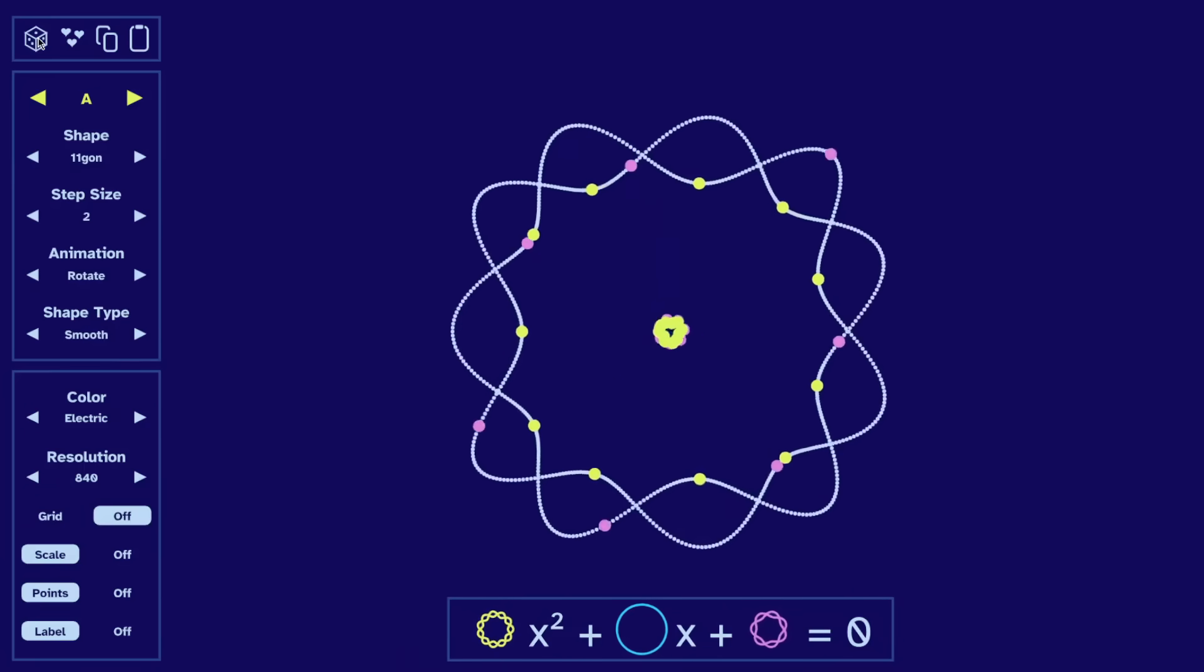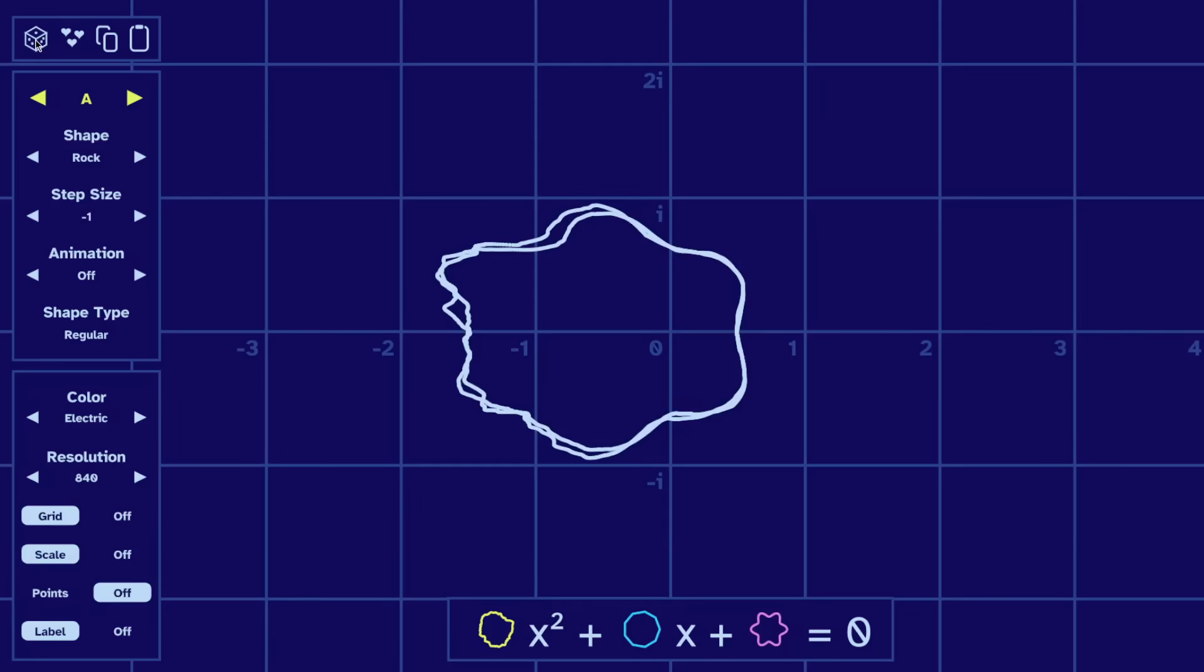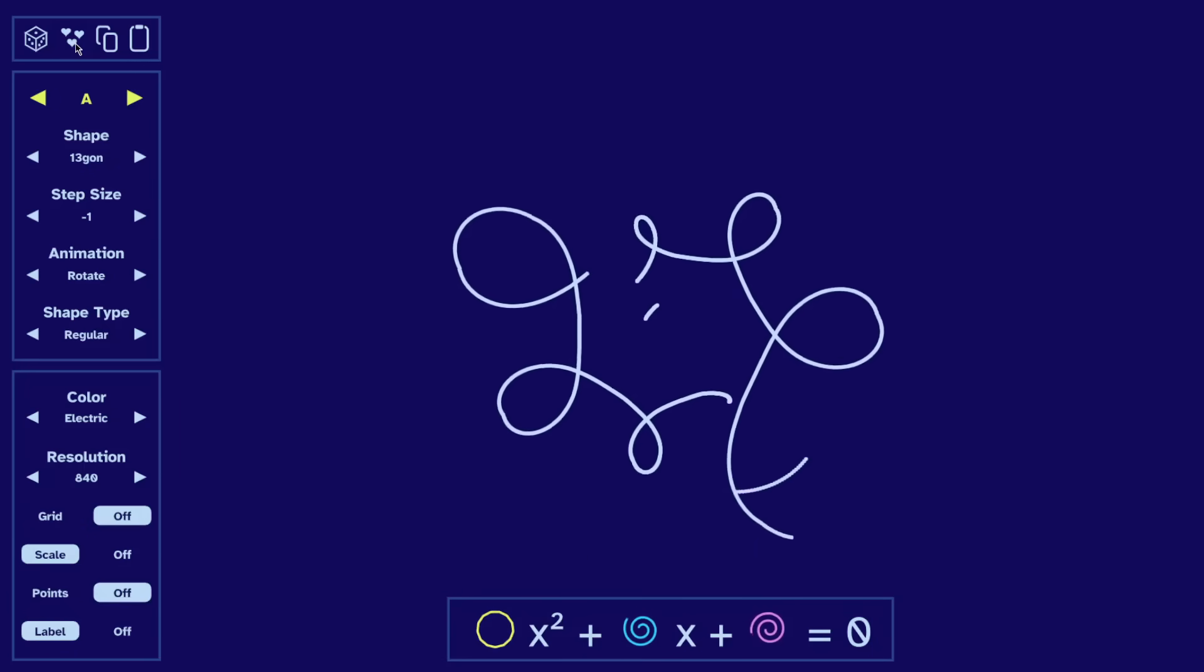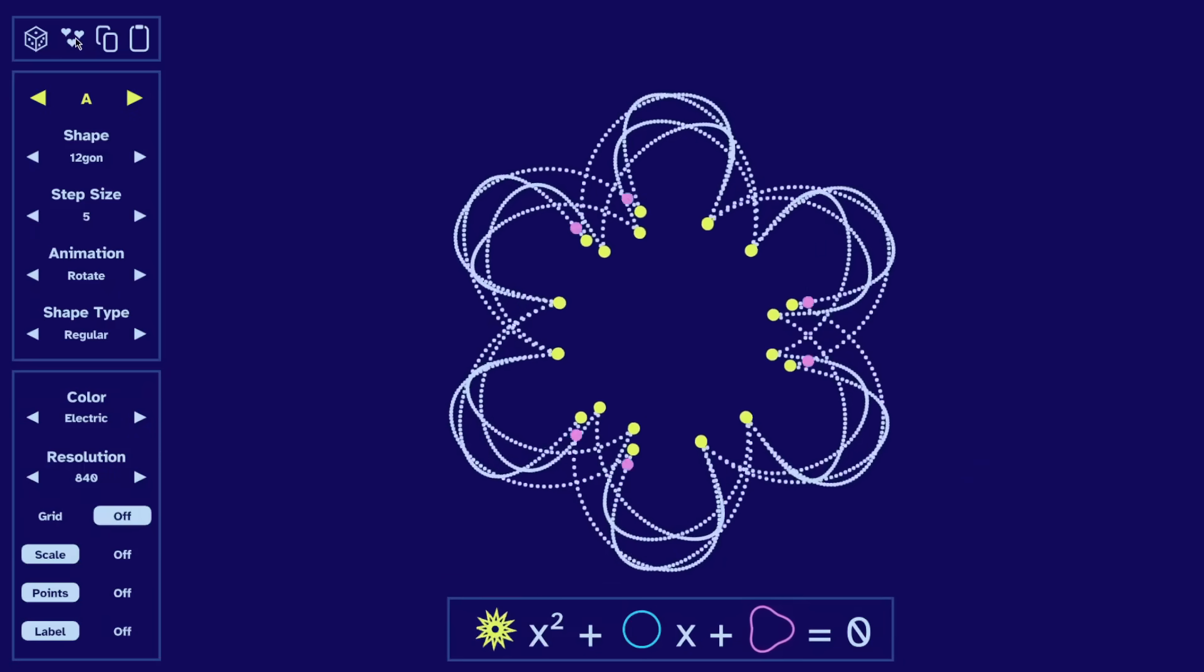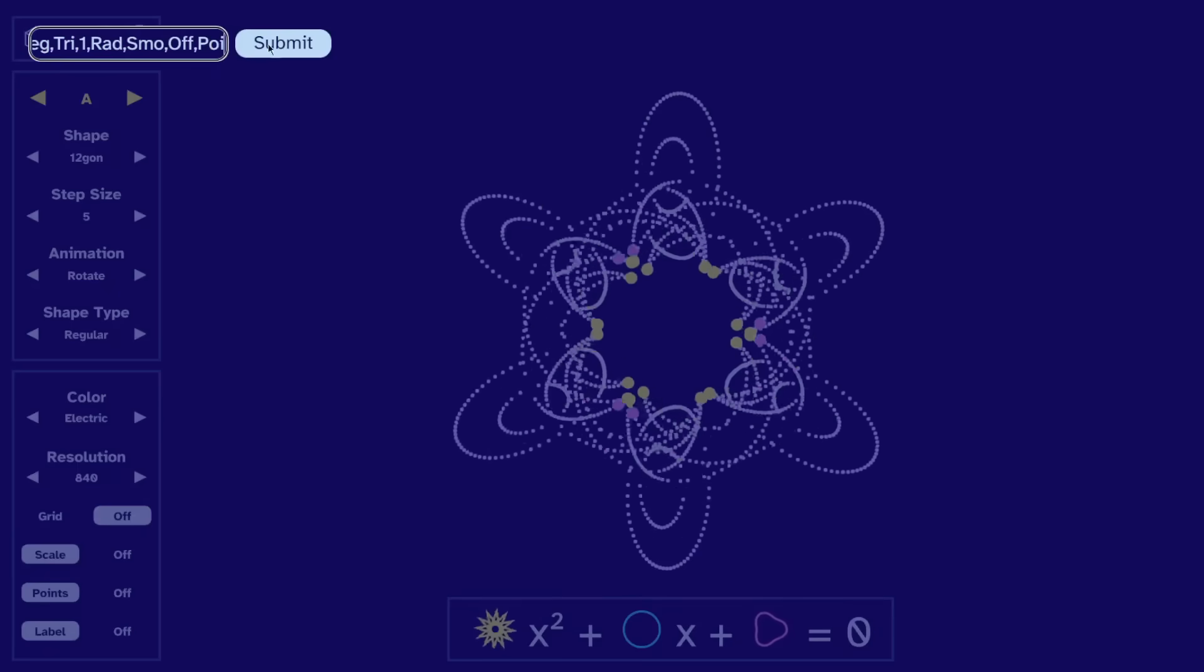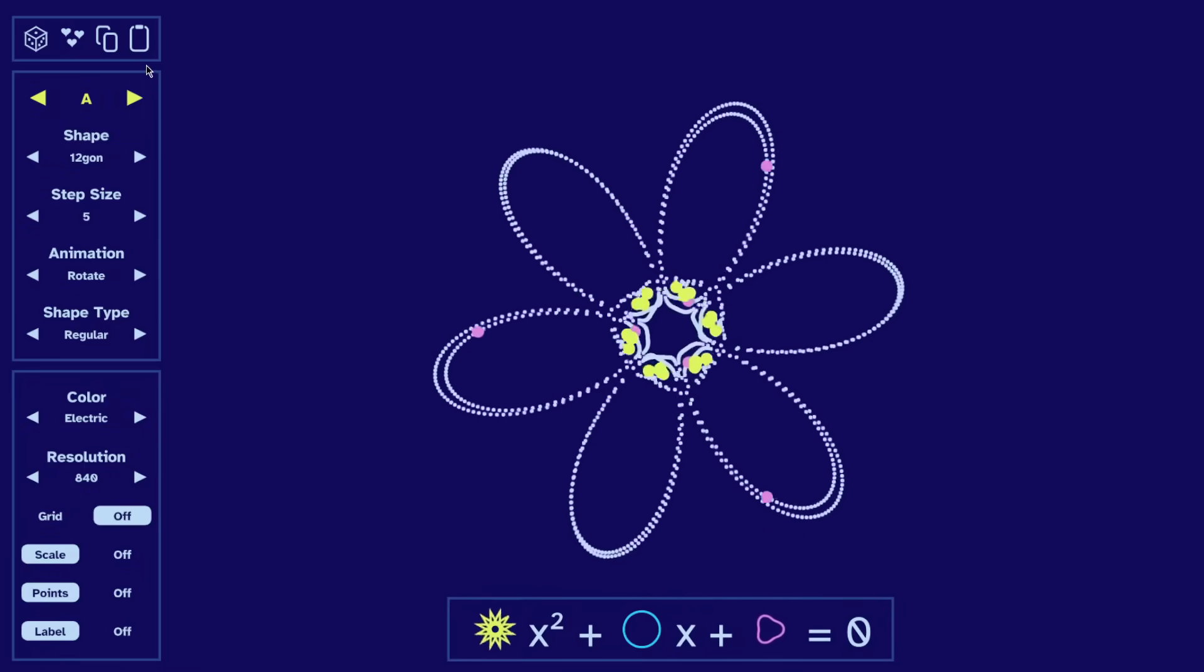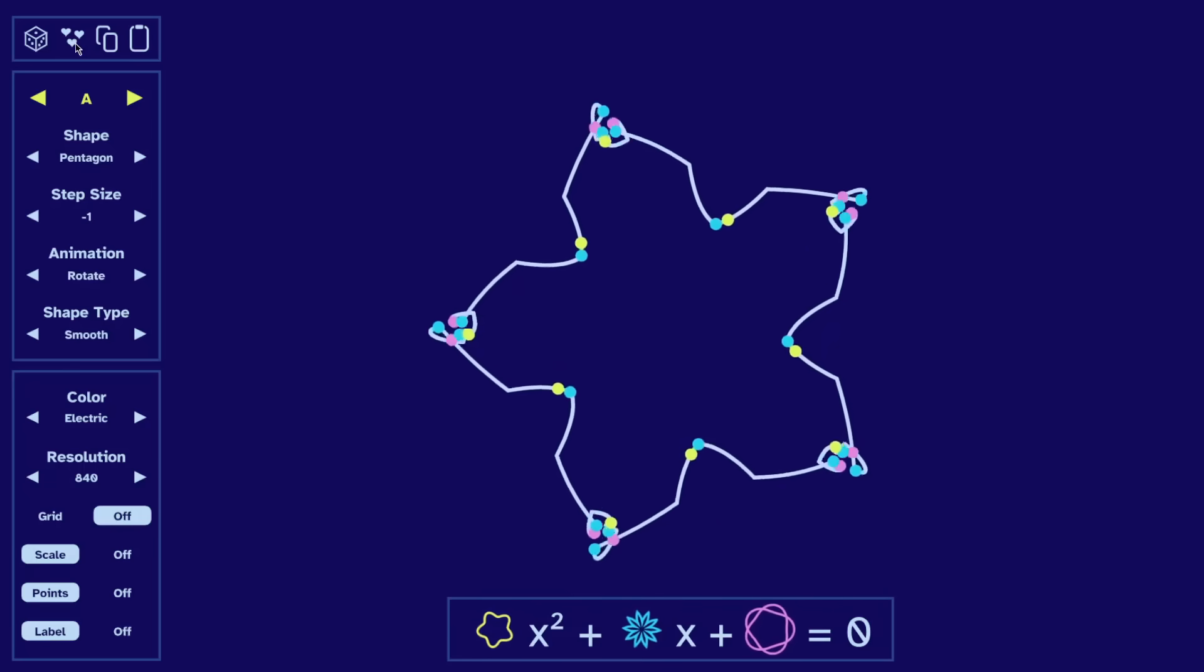Sometimes the result is amazing. But sometimes it's not. So I also added a hearts button to cycle through some of my favorites. Though I won't spoil them all in this video. You'll have to check them out yourself. And if you find an equation that you really like, you can copy the settings. And then paste them here later to get right back where you were. And you should also paste them in the comments. I want to see the cool patterns you find. And I'll add my favorite ones to this hearts section.